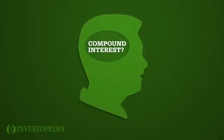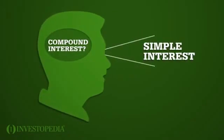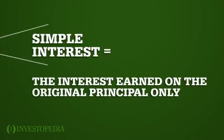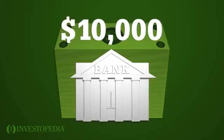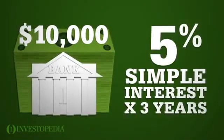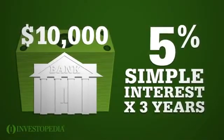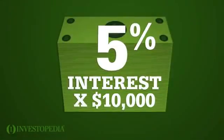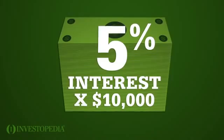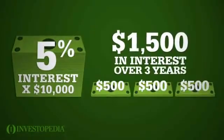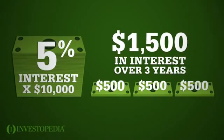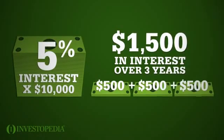To understand compound interest, let's first look at simple interest — the interest earned on the original principal only. Suppose you deposit $10,000 into a high interest savings account at a 5% simple interest rate for 3 years. The interest you earn each year is 5% times $10,000, which equals $500, for a total of $1,500 of interest at the end of year 3: $500 plus $500 plus $500.